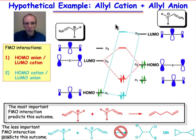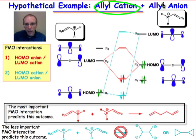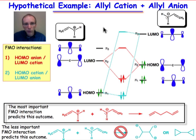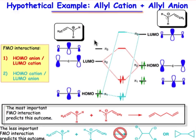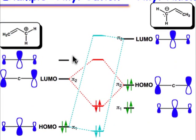Let's finish up this series of webcasts by working through an FMO analysis for the hypothetical reaction between allyl cation and allyl anion. These are two species that we previously encountered when we talked about LCAO construction of three-atom pi systems. I've reproduced the pi energy levels shown here and LCAO representations of their molecular orbitals.